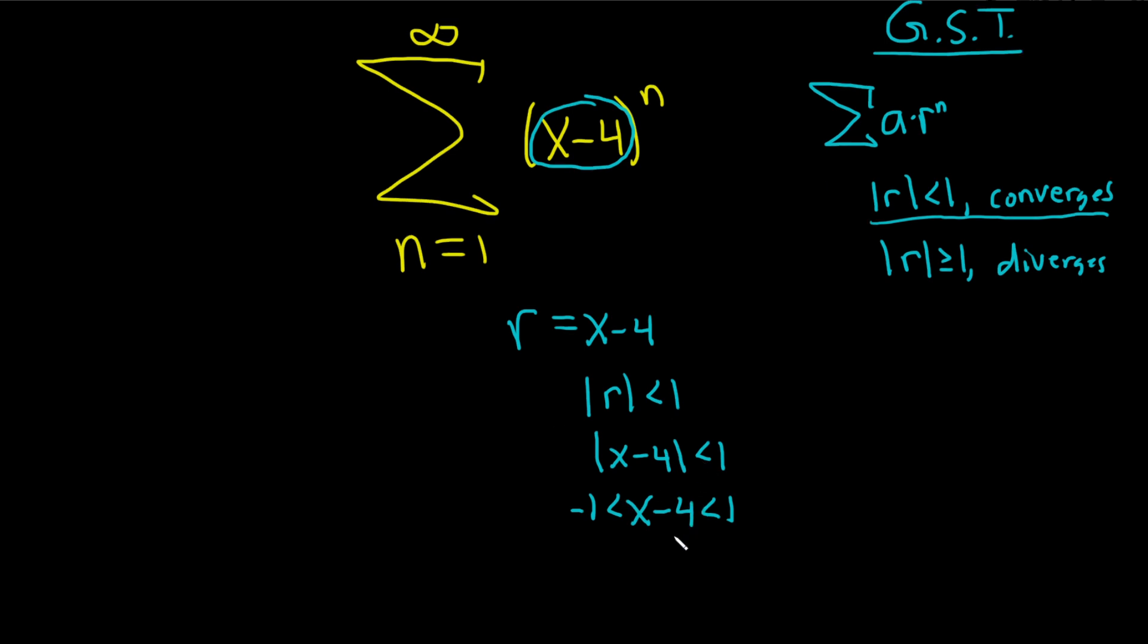And then we can just add 4 to all three sides, so plus 4, plus 4, plus 4, that gives us 3 less than x less than 5. That's it. That's the answer.